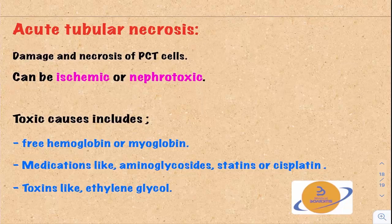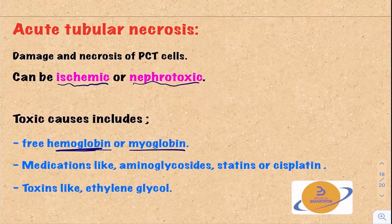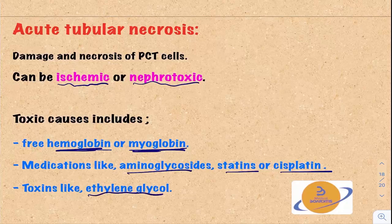Acute tubular necrosis is damage and necrosis to the proximal convoluted tubule cells. This can be caused by ischemia or low blood flow to the kidney, or by nephrotoxins. Toxins include free hemoglobin — released by damaged red blood cells into circulation, then precipitated in the kidney — and myoglobin, released from damaged skeletal muscle and similarly precipitated in the kidney. Medications like aminoglycosides, statins, and cisplatin can also cause it. Toxins like ethylene glycol can precipitate in the kidney and cause acute tubular necrosis.